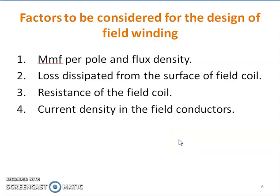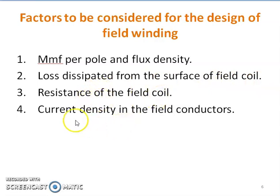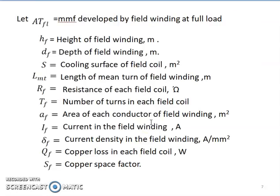There are four factors to be considered for the design of field winding: MMF per pole, flux density, loss dissipation from the surface of the field coil, resistance of the field coil, and current density in the field conductors.